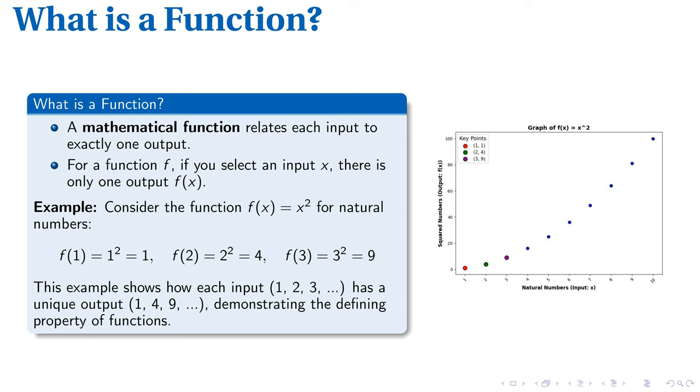Let's apply this. For input 1, the output is 1 squared equals 1. For the input 2, the output is 4, and an input of 3 gives us an output of 9. Notice the consistent pairing of each input to its unique output.